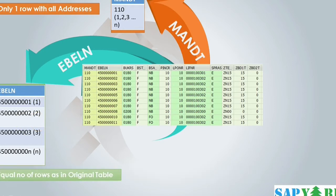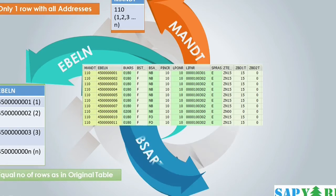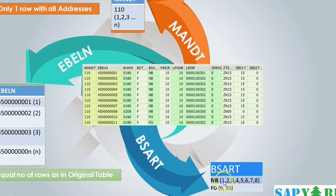Now let's see how many PO types would be there in the column table at the database level — BSART. Look, there are only two. Because in the actual table there is only NB and FO. So there will be only two rows in the column table at the database level, but they will have addresses. NB is in positions 1, 2, 3, 4, 5, 6, 7, and 8, whereas FO is in just 9 and 10. So from 10 entries we have compressed it to just two entries at the database level, and you can read faster because there is a data compression from 10 to 2 — that is almost 80% data compression. Remember, all this happens at the database level. There is nothing for us to see; we just need to believe it.